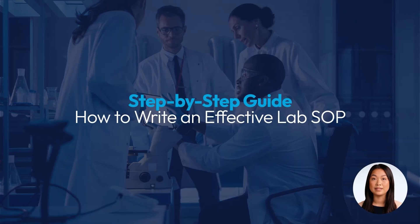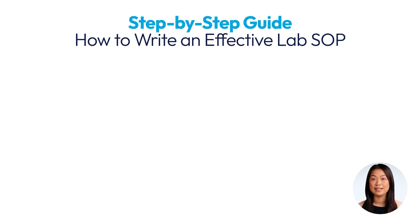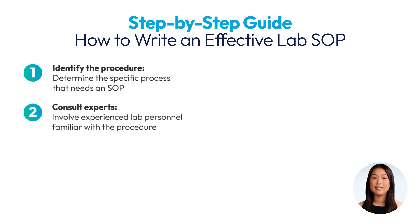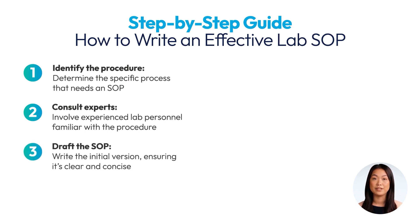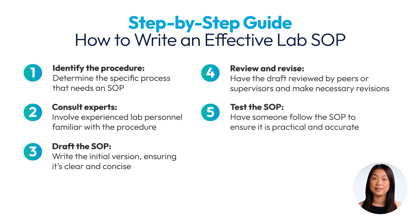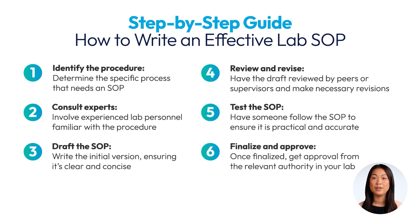Writing an effective lab SOP involves several steps. First, determine the specific process that needs an SOP. To ensure accuracy, involve experienced lab personnel familiar with the procedure in its creation. After that, draft an initial version, ensuring it's clear and concise, then have the draft reviewed by peers or supervisors and make necessary revisions. Before enacting it, have someone follow the SOP to ensure it's practical and accurate. Once finalized, get approval from the relevant authority in your lab.